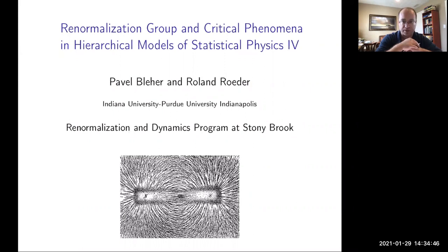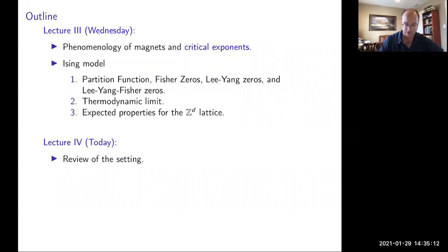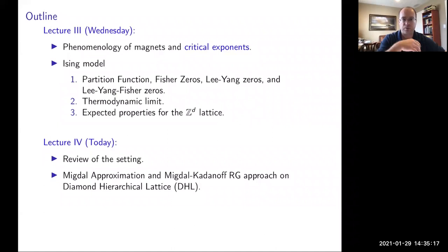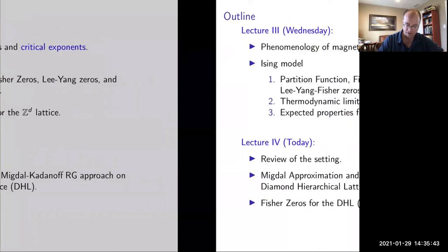My intent today is to recall enough that if you weren't here on Wednesday you can still follow. I'll review the setting with some simplifications, then talk about the Migdal approximation, which allows you to approximate the Z^2 or Z^d lattice Ising model with a version where you get exact renormalization in finitely many — specifically two — variables. That gives us the diamond hierarchical lattice, our main player, with Migdal-Kadanoff renormalization.